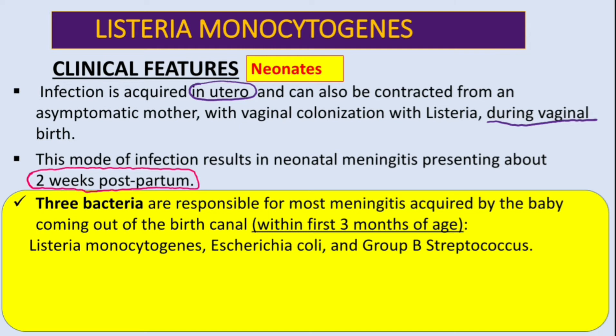Three bacteria are responsible for most meningitis acquired by the baby coming out of the birth canal within the first three months: Listeria monocytogenes, E. coli, and Group B Streptococcus.